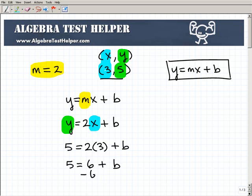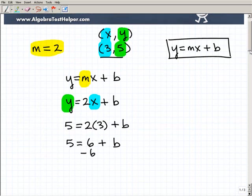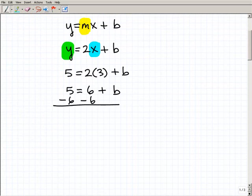And then I'm going to go ahead and subtract 6 from both sides. Give myself some more room here. 6 from both sides of the equation, and I get negative 1 is equal to b. And that's it. Okay?